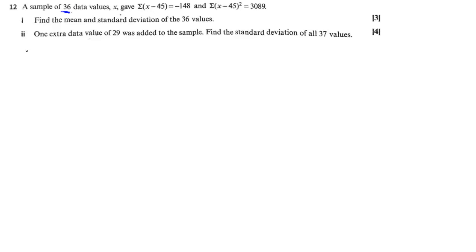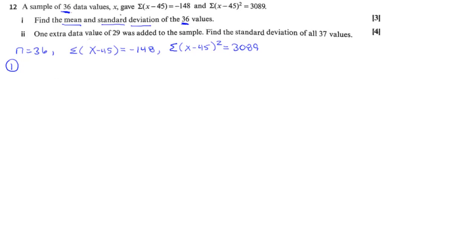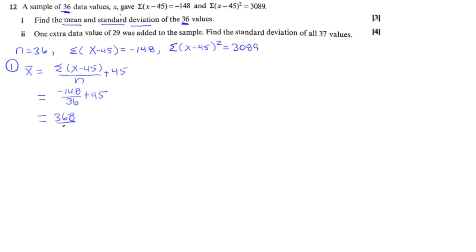Number twelve: a data sample of 36 values with the sum of (x minus 45) equal to negative 148 and the sum of (x minus 45) squared equal to 3089. Find the mean and standard deviation. For the mean with coded data, we divide negative 148 by 36 and add back 45, giving a mean of 368 over 9, or 40.9 to three significant figures.